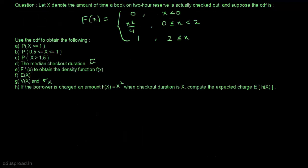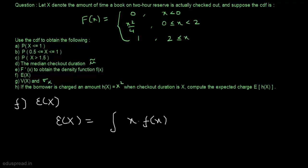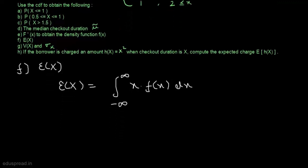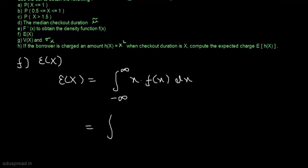Let's move to part F. In part F, we have to calculate the expected value of X. We know that E(X) = ∫ x · f(x) dx from −∞ to ∞. In this case, since f(x) = x/2 and x takes values between 0 and 2, this equals ∫₀² x · (x/2) dx.